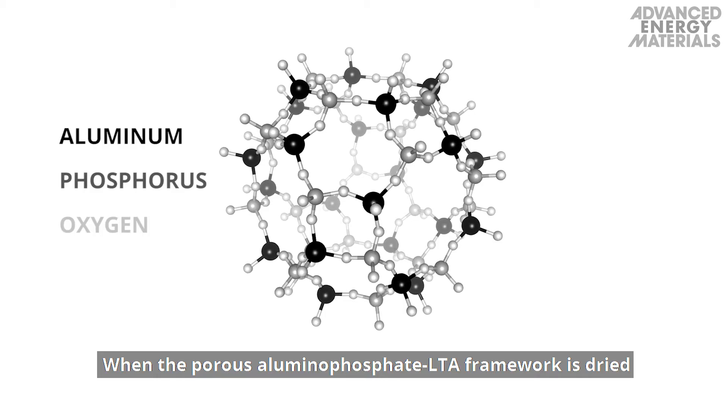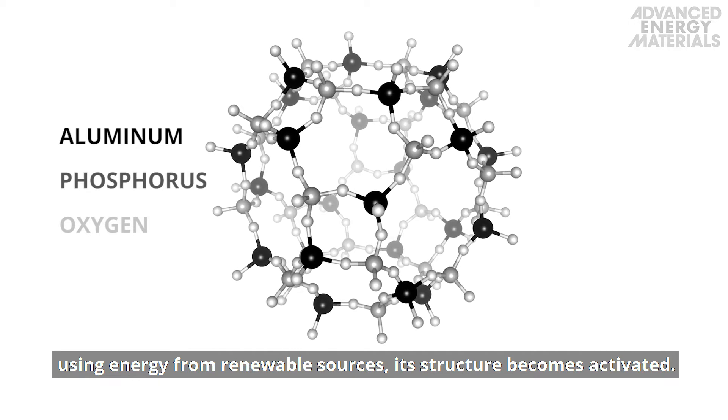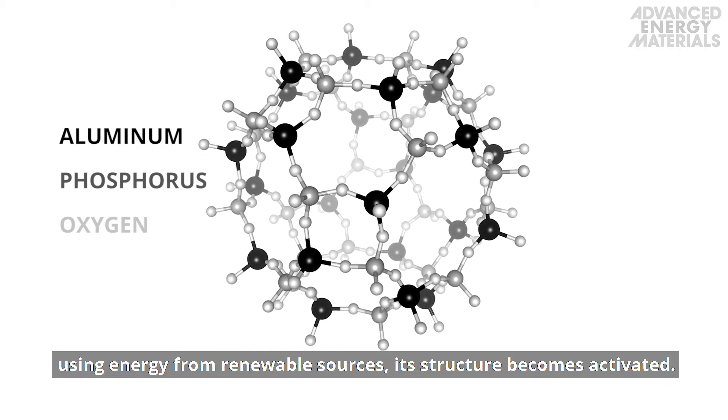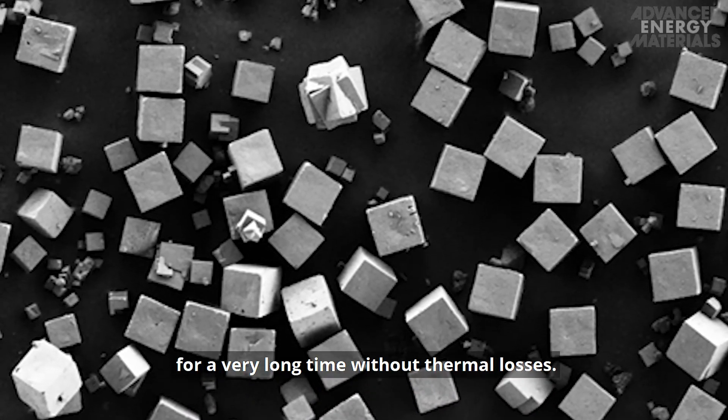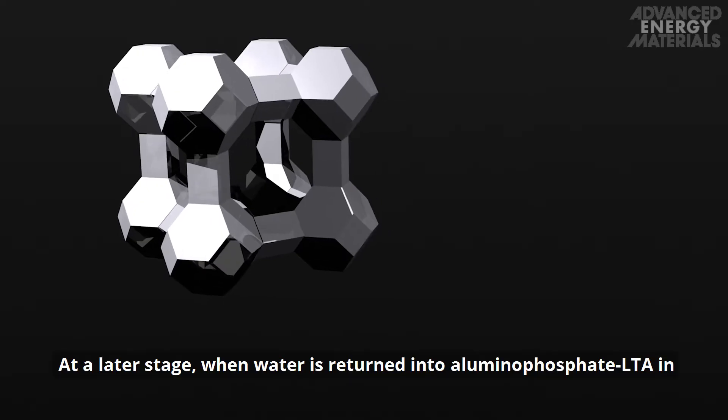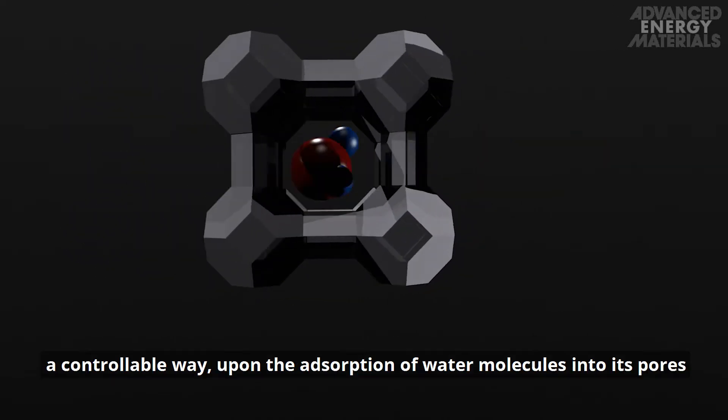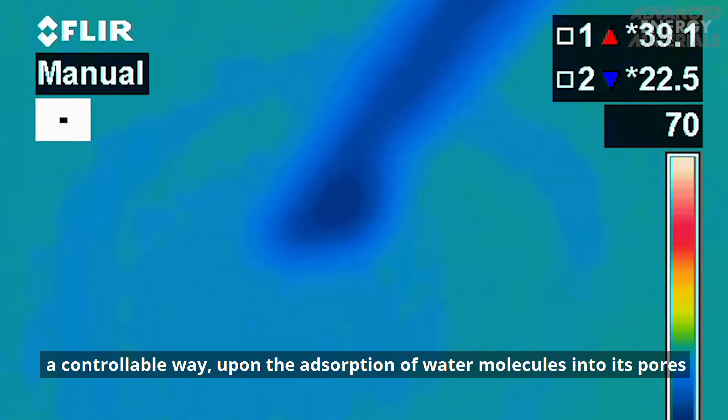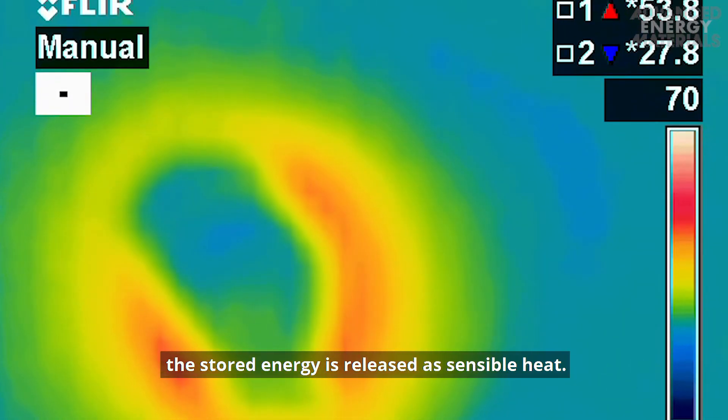When the porous aluminophosphate LTA framework is dried using energy from renewable sources, its structure becomes activated. The material can be stored in the obtained state for a very long time without thermal losses. At a later stage, when water is returned into aluminophosphate LTA in a controllable way, upon the adsorption of water molecules into its pores, the stored energy is released as sensible heat.